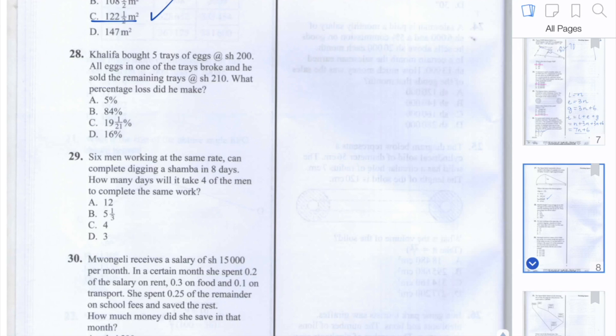We're now on to question 28 of the 2013 KTP Maths paper. It says Khalifa bought five trays of eggs at 200 shillings each. All eggs in one of the trays broke and he sold the remaining trays at 210 shillings each. What percentage loss did he make?